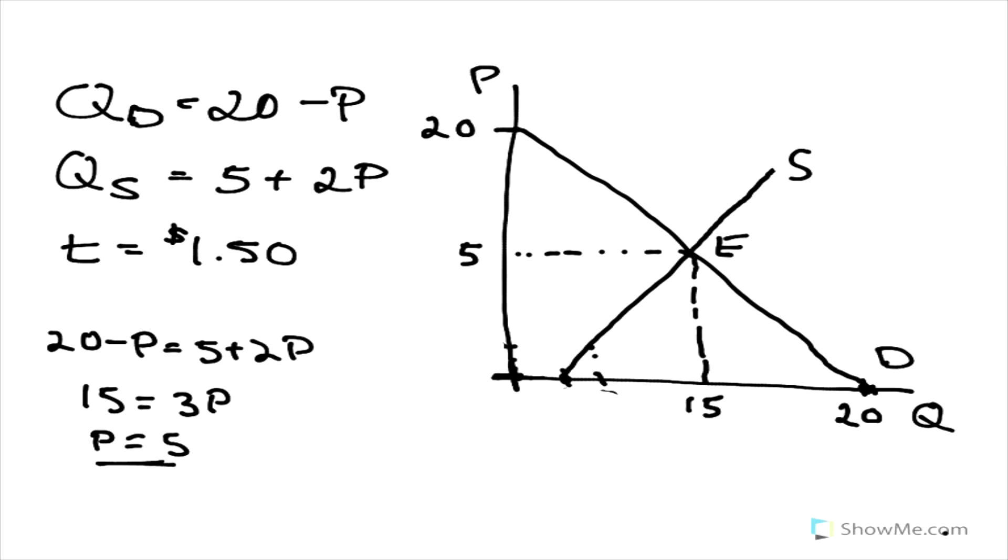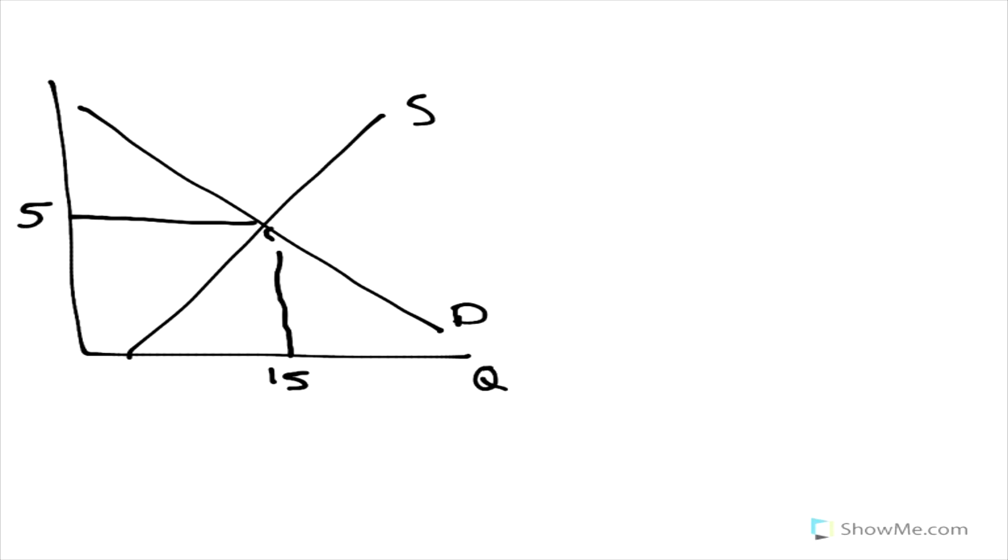Now what we're going to do is we're going to apply this tax. I'm going to redraw this picture really quickly over here. We had our supply, our demand. This equilibrium quantity was 15. Equilibrium price was 5. And I'll rewrite these really quickly too.